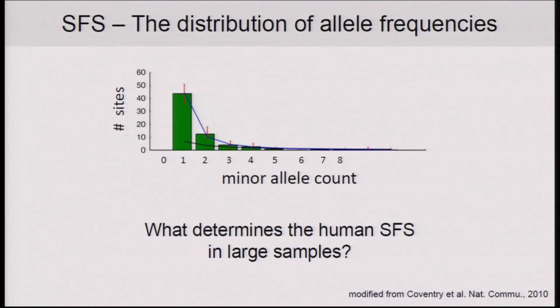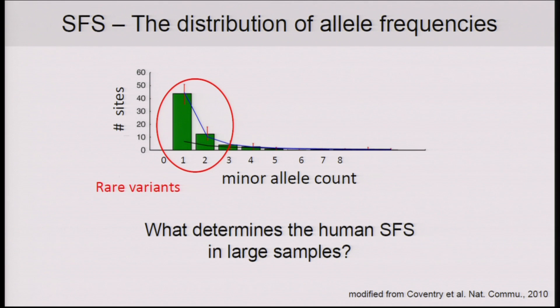In population genetics, we ask how evolutionary processes shape patterns of genetic variation, such as allele frequencies. One of the most basic objects one can talk about in this respect is the distribution of allele frequencies, otherwise known as the site-frequency spectrum or SFS. For the purpose of this talk, I'll be focusing on a simple summary of this distribution, which I'll call the fraction of rare variants — the fraction of variants within a sample that we see in only one or two copies.